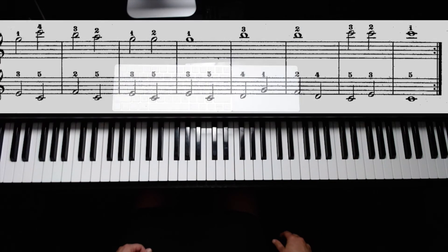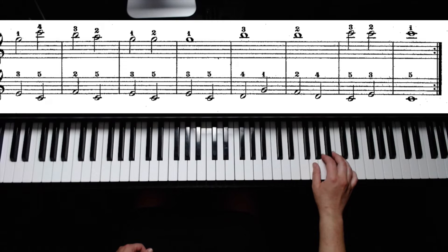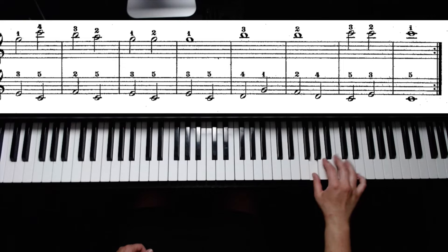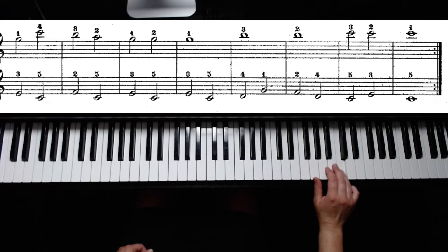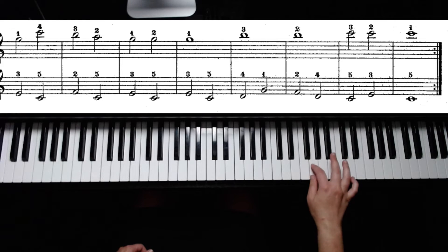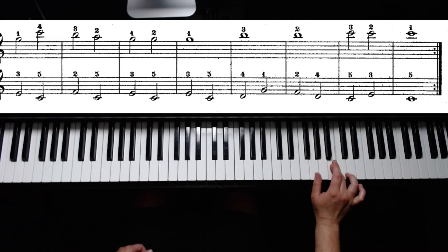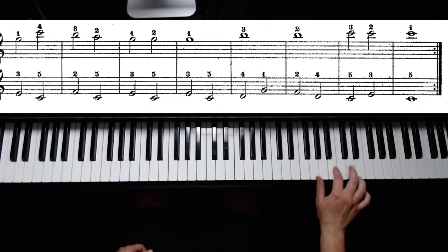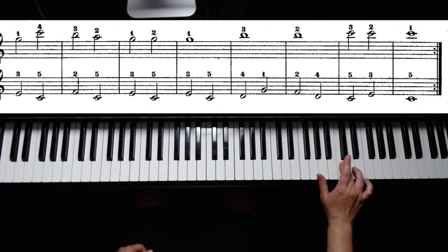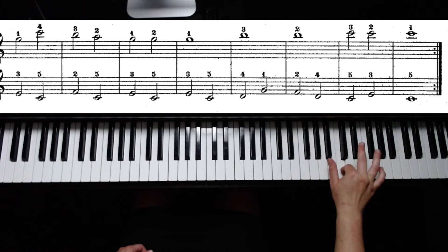And now the last eight bars. Starting with G on your thumb, it's actually going to be much like the first and second line. So G, C, B, A, G with one, G with two, G with one. Over to B with three, B with two, C with three, then two, and then one.